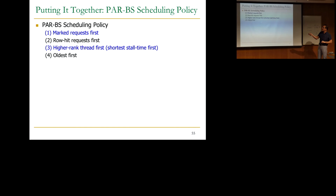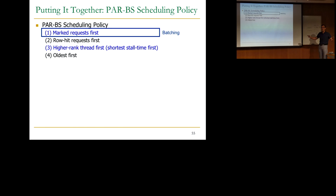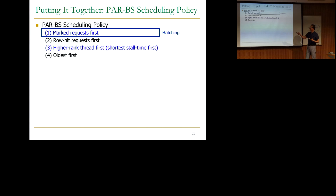So what's the scheduling policy? Basically we want to prioritize the batch over others for starvation freedom and fairness. The second priority is interesting — do you use higher-rank-thread-first, or row-hit-request-first? We've looked at different combinations, and it turns out prioritizing row-hit requests over higher rank performs slightly better. Interestingly, the intuitive approach — prioritize higher-rank threads first, then within each thread prioritize row hits — turns out on average to be slightly worse than prioritizing row hits first overall.